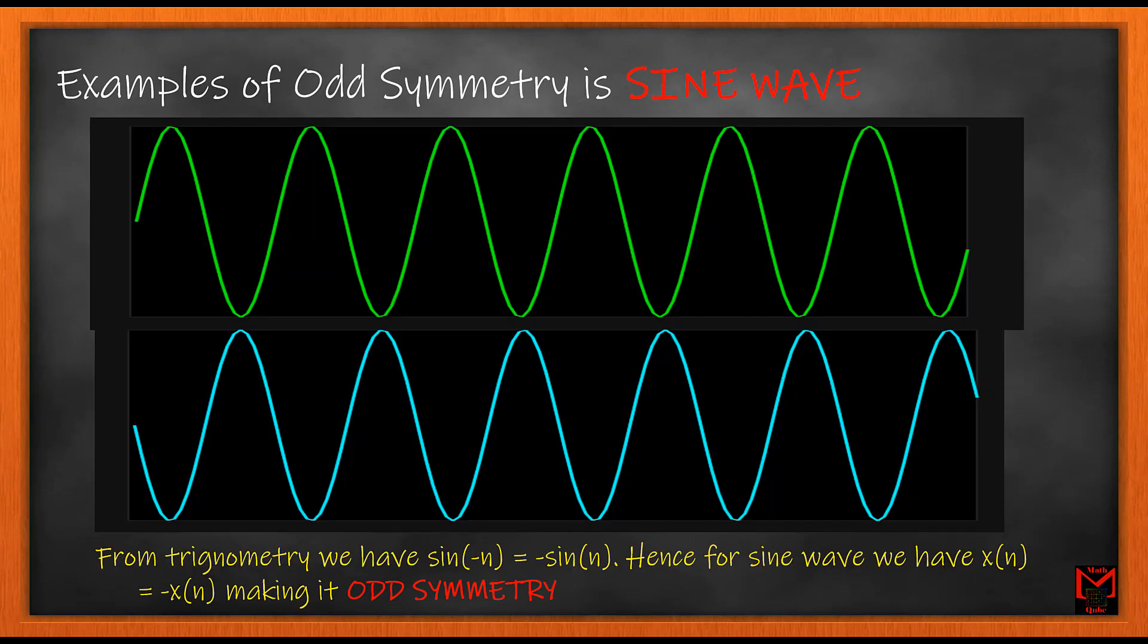A big example for symmetry is sinusoidal signals including sine and cosine. Sine signal is an odd symmetry signal since the trigonometric identity has it as sin(-θ) = -sin(θ), whereas the cosine counterpart is even symmetric as cos(-θ) = cos(θ).